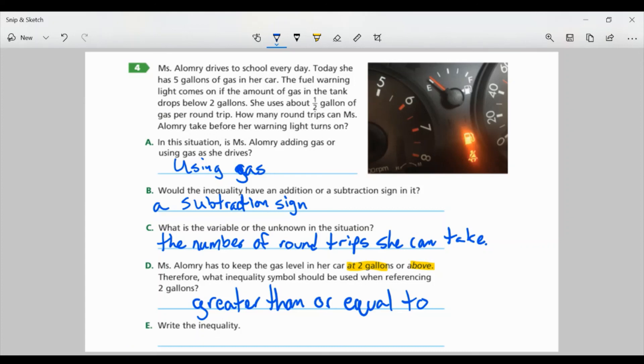Part E. Write the inequality. Well, I know based on part D, it has to be greater than or equal to two gallons. And it says she had five gallons or has five gallons. And we're taking away one half of a gallon per round trip. So, T is what I'm going to use for my variable. And you can use any variable. X, A, B, Y, Z. And in this case, I'm using T for trip. So, this would be my inequality. Five gallons take away one half a gallon per round trip has to be greater than or equal to two gallons.